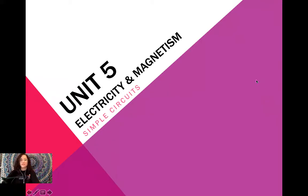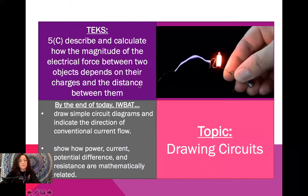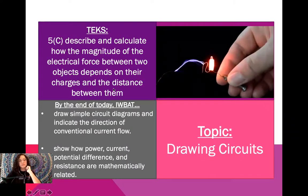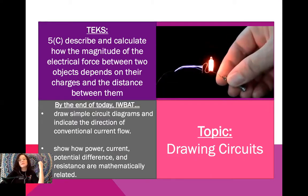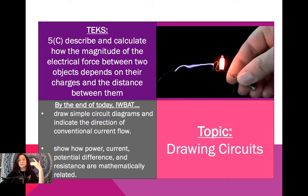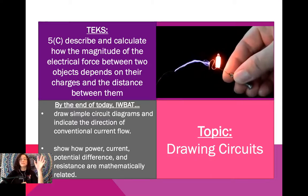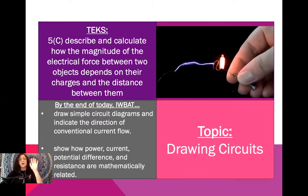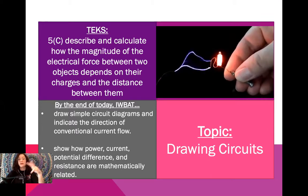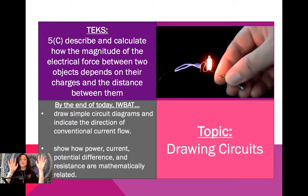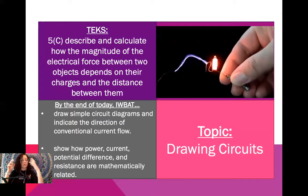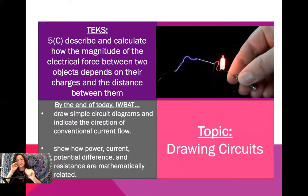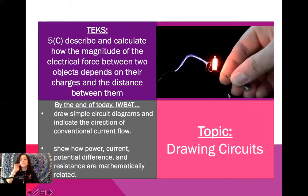All right, so still in year 5, electricity and magnetism, and like I said, today is simple circuits. Our objective, by the end of the day today, you will be able to draw simple circuit diagrams and indicate the direction of conventional current flow. So there's a few things you might have some questions about as we progress through this unit. I promise I will clear up any questions or concerns that you have, but for today we're just kind of doing the basics of drawing these circuits, and we're not really going to be talking about how these pieces work together. We will. Don't worry. I would not deprive you of that learning.